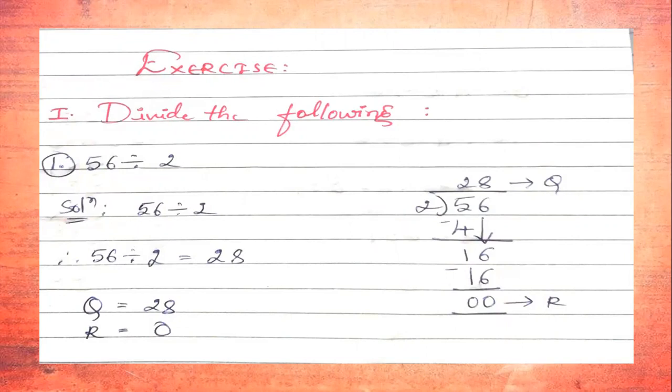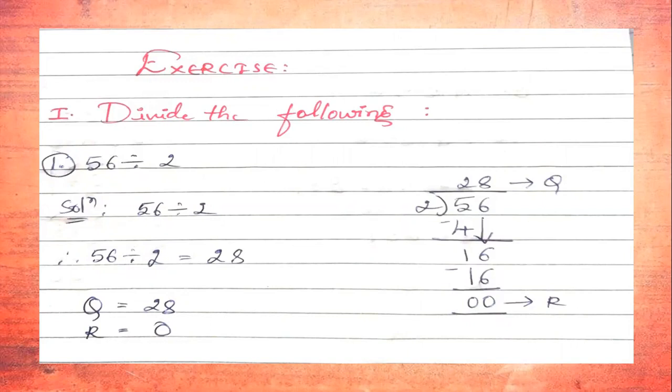Next we pull down the number 6, making it 16. We check whether 16 is divisible by 2. Since 2×8=16, yes, 16 is exactly divisible by 2. So 16 minus 16 equals 0. We are getting remainder 0 and quotient 28.